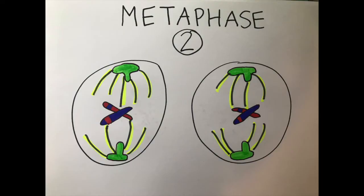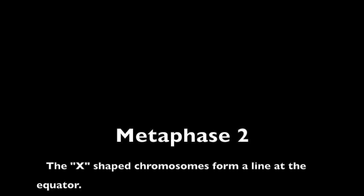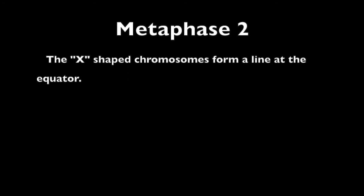In metaphase II, the second phase of meiosis II, X-shaped chromosomes form a single line at the equator.